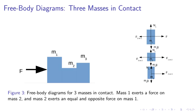Free body diagrams. Consider three bodies in contact. So we have m1, m2, and m3 which are three masses. Mass 1 exerts a force on mass 2. Mass 2 exerts an equal and opposite force on mass 1. On the right, we show the free body diagram for m1, m2, and m3. Each body has gravity acting on it.